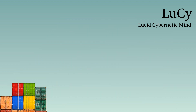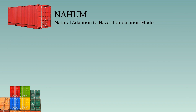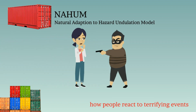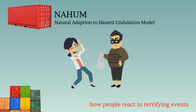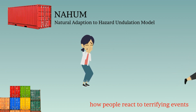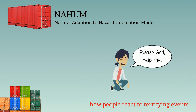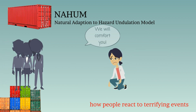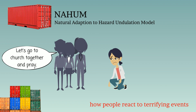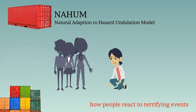Let's review all of the individual models that will combine to form Lucy. The first model is NAHUM, the Natural Adaptation to Hazard Undulation Model — a model of how people react to terrifying events. This theory says that when people become aware of their own mortality, they become more likely to believe in supernatural agents and more likely to practice religious rituals with people in their social group. We know this from lots of experiments and observations, so that's what NAHUM models.